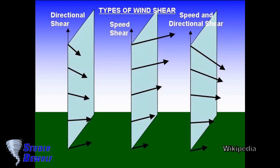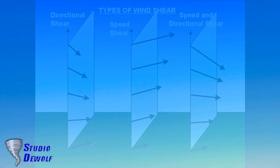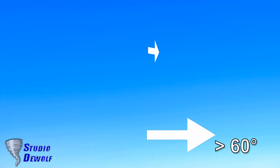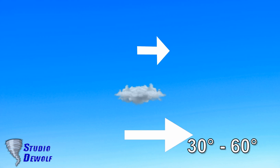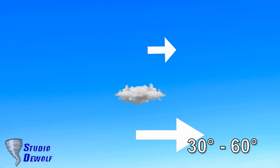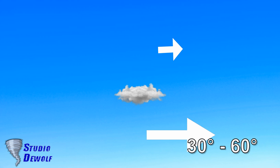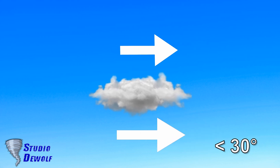Wind shear. Directional shear is one of the most important factors governing the development of squalls. Environments with weak directional shear typically produce more intense squalls than those with higher shear levels. If directional shear between the surface and the height at which barometric pressure measures 700 mb is greater than 60 degrees, nothing more than flurries can be expected. If the directional shear is between 30 and 60 degrees, weak lake effect bands are possible. In environments where the shear is less than 30 degrees, strong, well-organized bands can be expected.